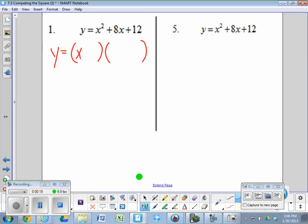Which would be x plus 6 times x plus 2, and that simply comes from looking for two factors of 12 that add up to 8, which are 6 and 2. So now we are in factored form.